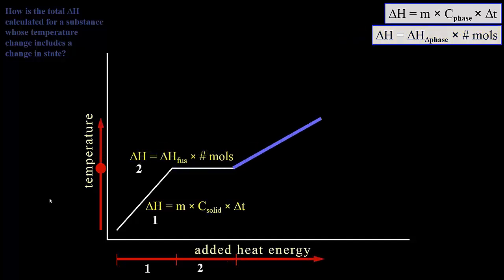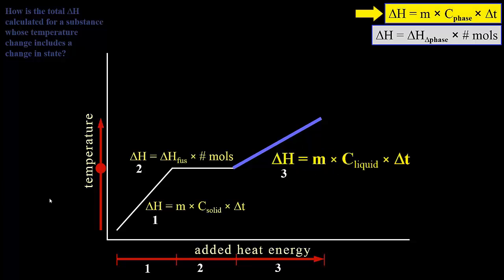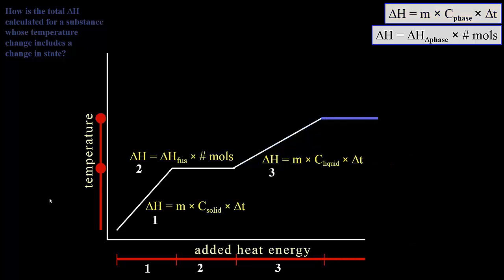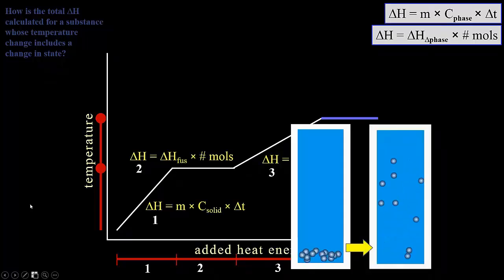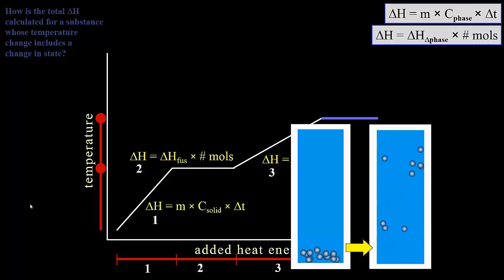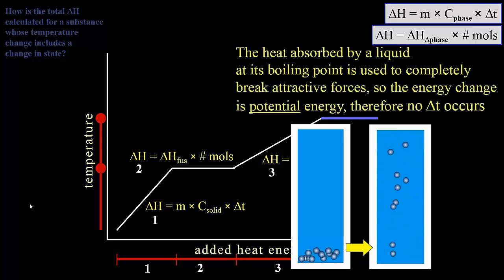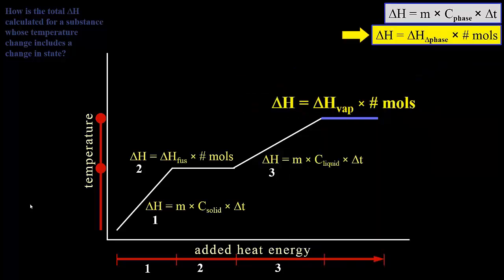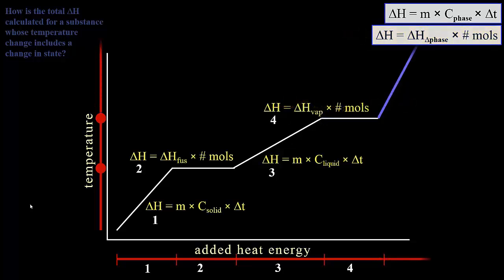The third part of the curve is the liquid changing temperature, so we use the specific heat of the liquid in the third calculation. Next is boiling. We can see again that heat energy is used to break attractive forces, and here they are completely broken as the substance becomes a gas, resulting in a positional change in the particles. This is a potential energy change — there is no change in kinetic energy, and therefore no change in temperature. Here we use the second equation with the substance's heat of vaporization, which is the energy required for a liquid to break apart into the gas phase. This is our fourth delta H.